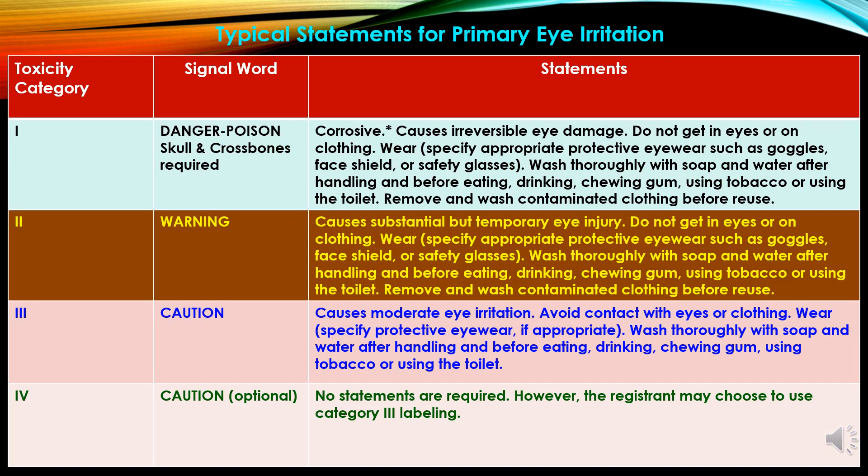Now typical statements for primary eye irritation. In toxicity category 1, the signal word is 'Danger/Poison,' a skull and crossbones is required, and the statement is: corrosive — causes irreversible eye damage; do not get in eyes, on skin or clothing; wear protective eyewear such as goggles, face shield or safety glasses. In category 2, the signal word is 'Warning,' and the statement is: causes substantial but temporary eye injury. In category 3, the signal word is 'Caution,' and the statement is: causes moderate eye irritation. In category 4, the signal word is 'Caution,' and no statements are required.